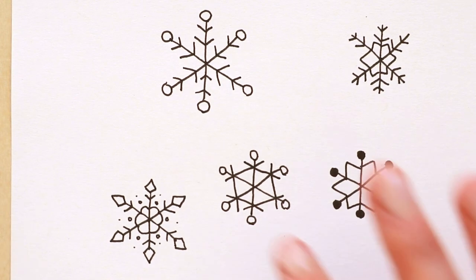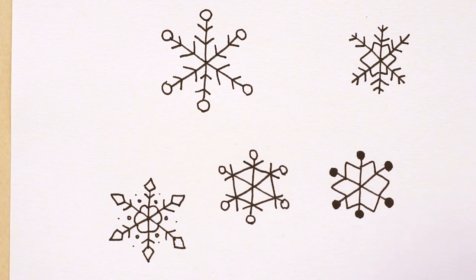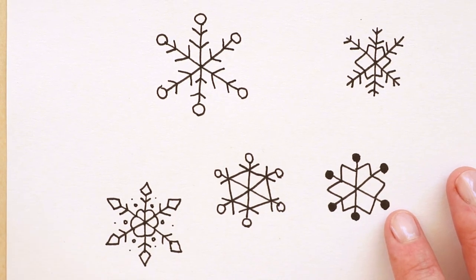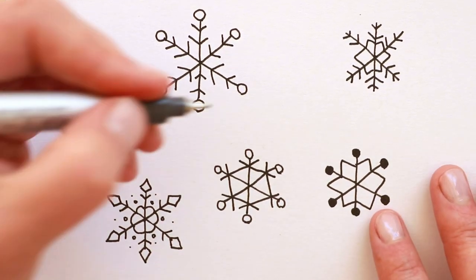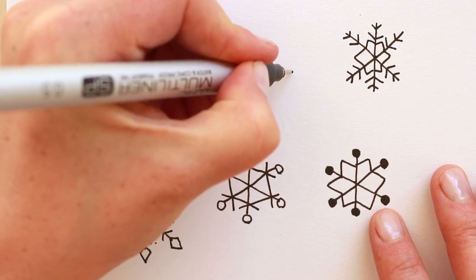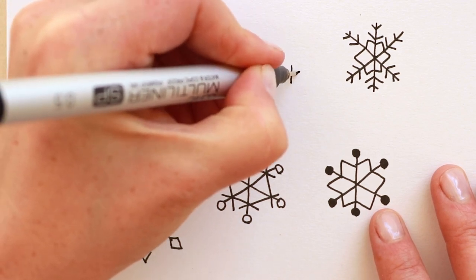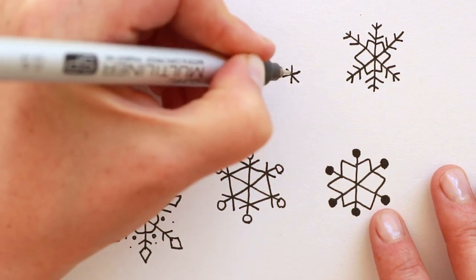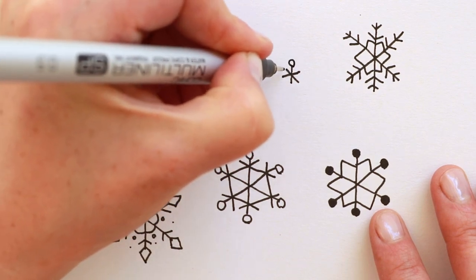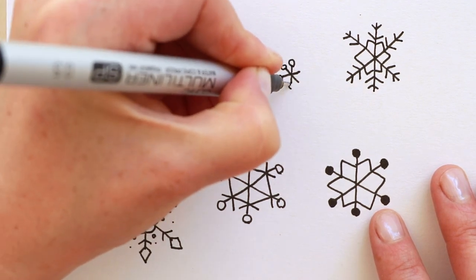And then you have all this empty space around it. So you can start to put some simpler snowflakes. Some simpler little shapes. Let's say we just have our six pointed base or a four pointed or eight pointed or whatever you like. And then just add the balls and the tips.